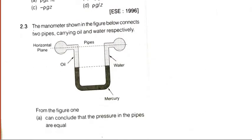Third question is a good question. The manometer shown in the figure connects two pipes carrying oil and water respectively. Here oil is placed, here water is placed. Now we see that the level of mercury is same. It means pressure here at point 1 equals pressure at point 2. But we know that density of oil is less than density of water.